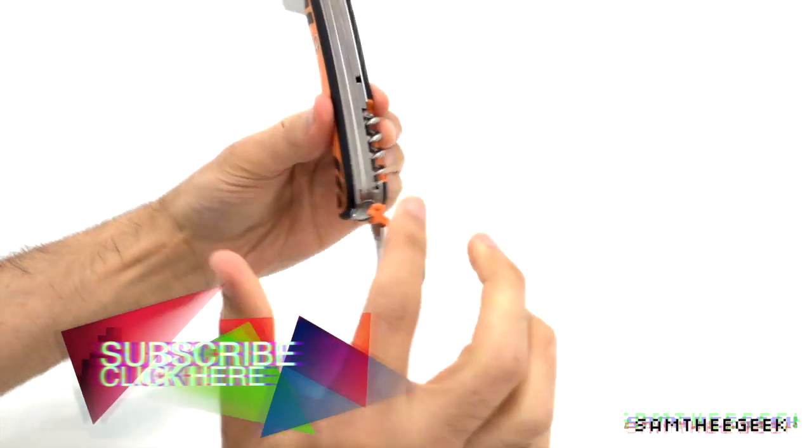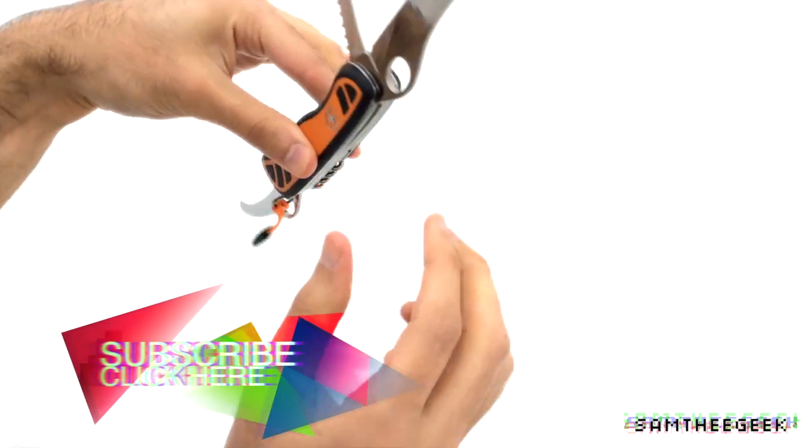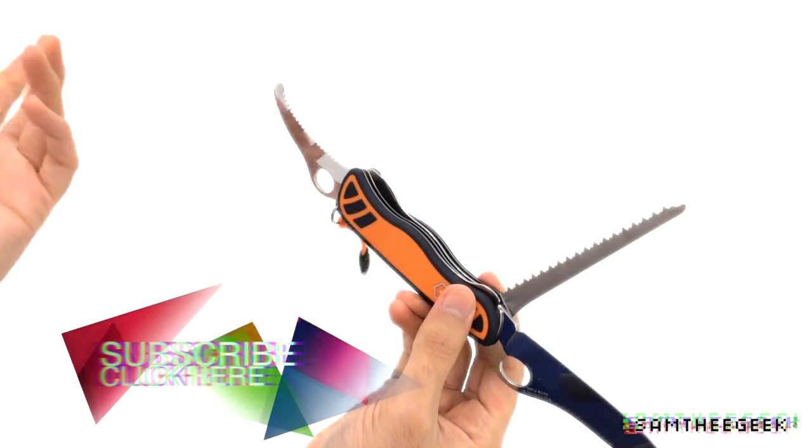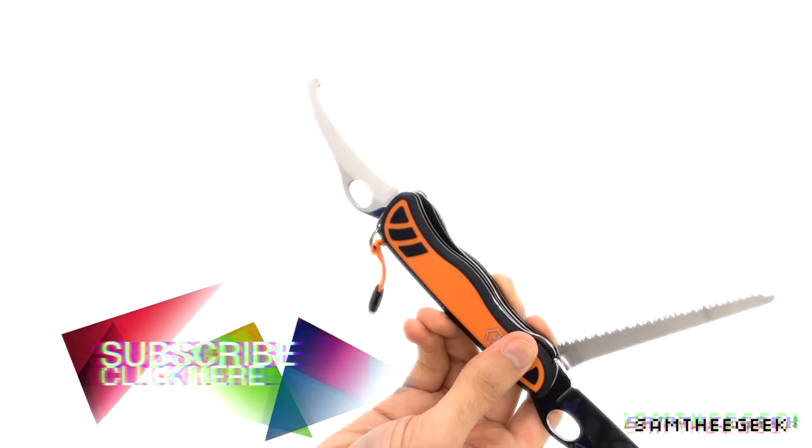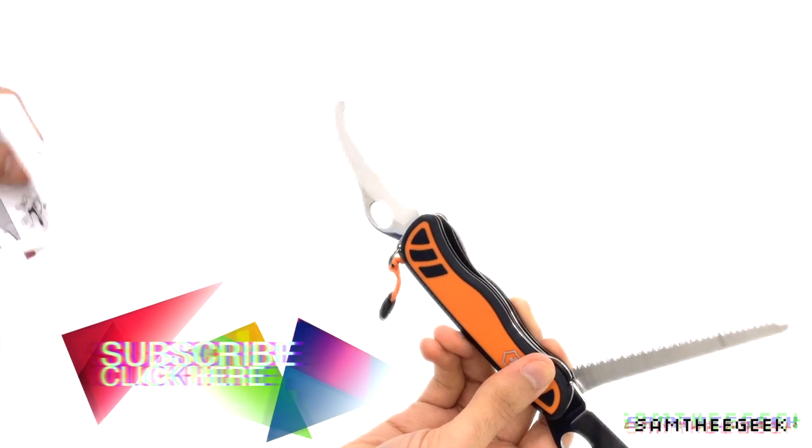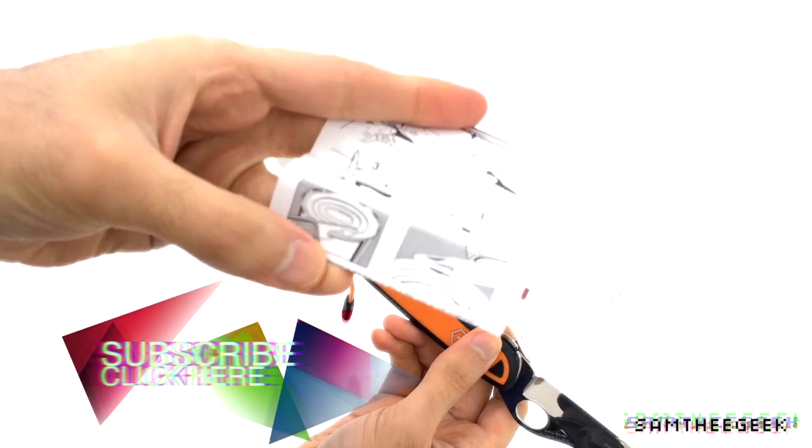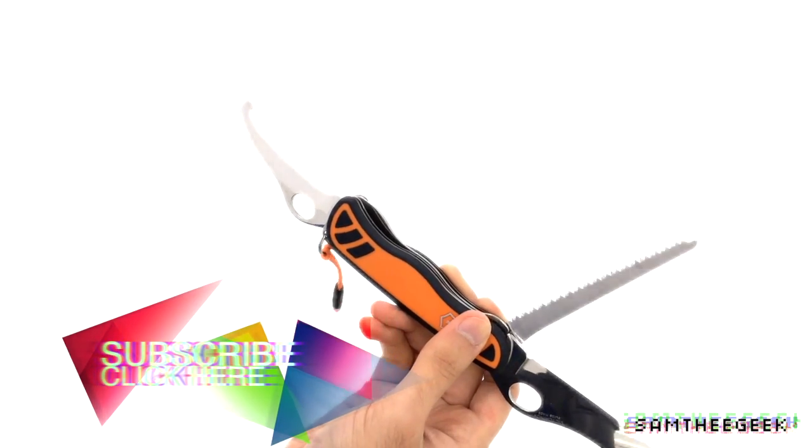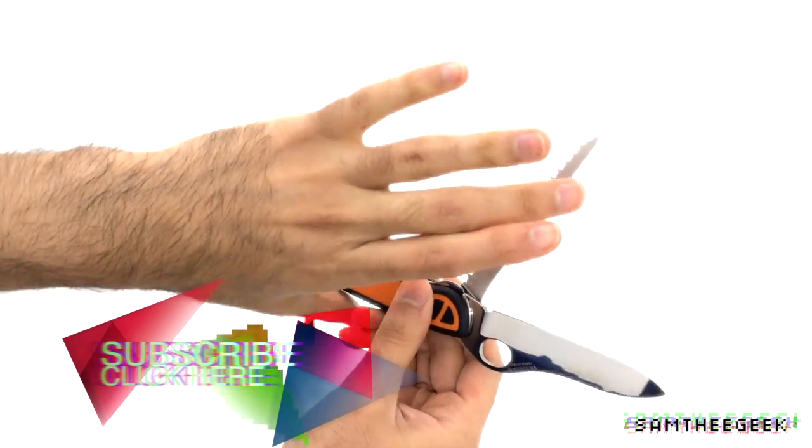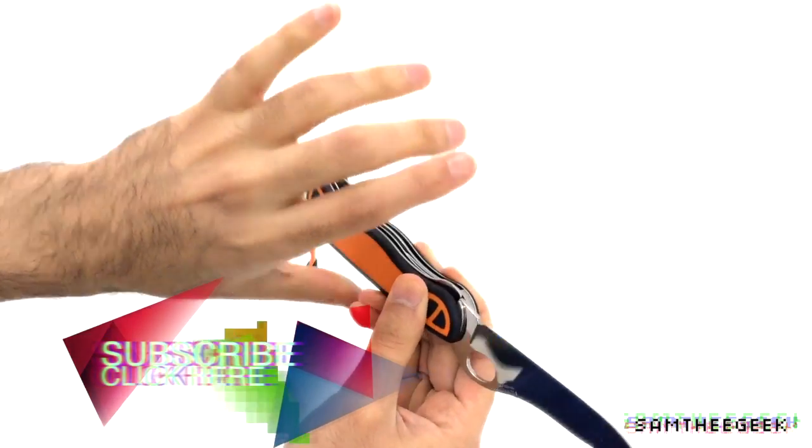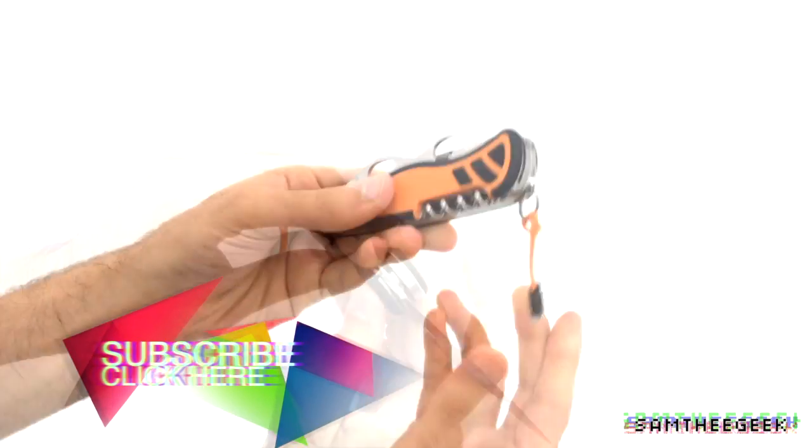And over here we got a corkscrew. Yep. I don't know why in the catalog they mentioned there is a screwdriver and can opener right here. That is so weird, you guys can see that. Yeah, I guess they print them anyway then. Okay, cool.